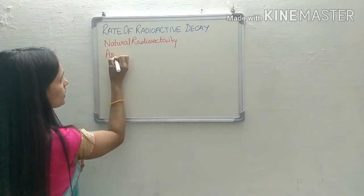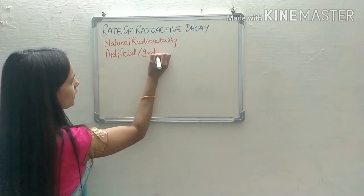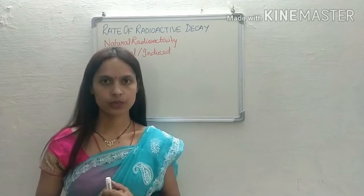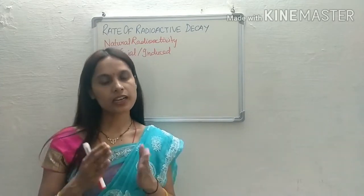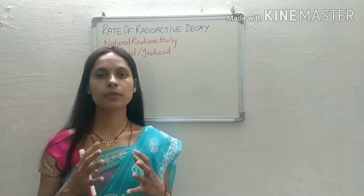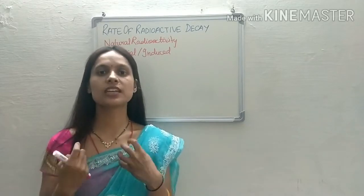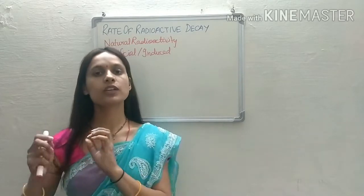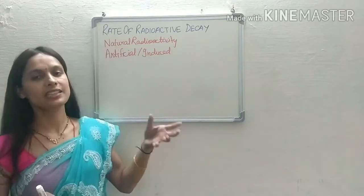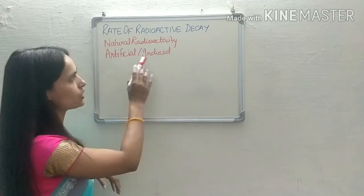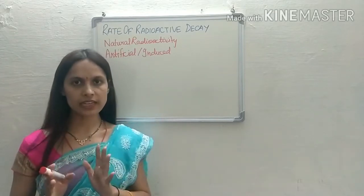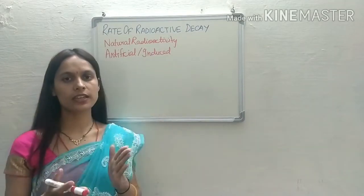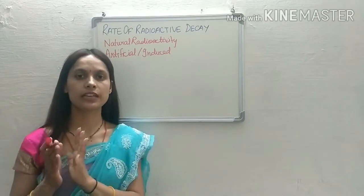Artificial radioactivity is also known as induced radioactivity. Here, radioactivity is induced in a particular element. For example, cobalt is not a radioactive element, but if we bombard cobalt with subatomic particles like neutrons, protons, or electrons, it produces an isotope that emits radiation and behaves like a radioactive element. This is known as artificial or induced radioactivity.